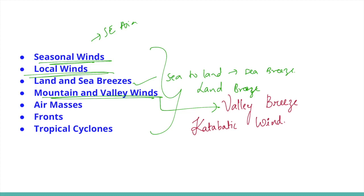Another type of warm wind occurs on the leeward side of mountain ranges. The moisture in these winds condenses and precipitates while crossing the mountains. When the air descends the leeward side of the slope, the dry air warms up by adiabatic process, and this dry, warm air may melt snow in a short time.